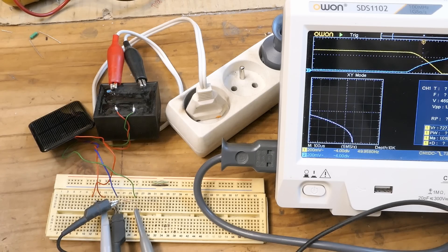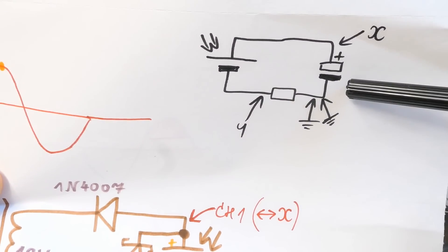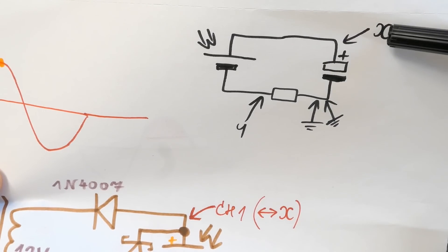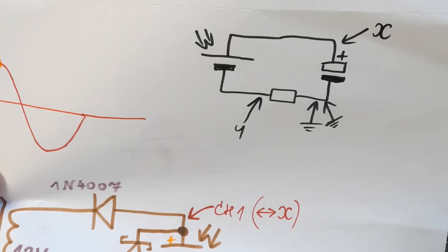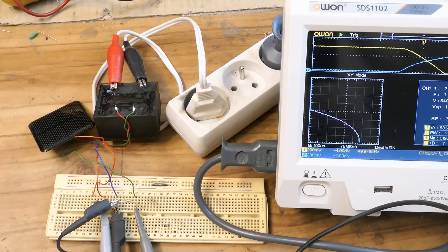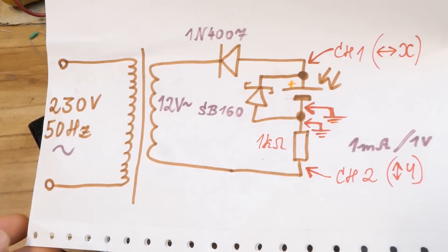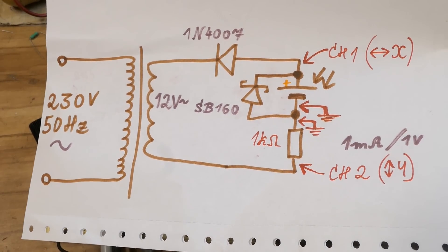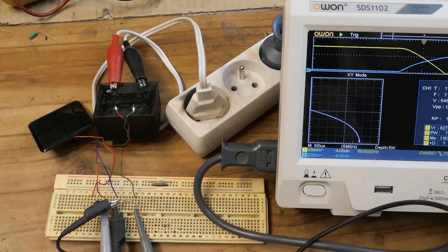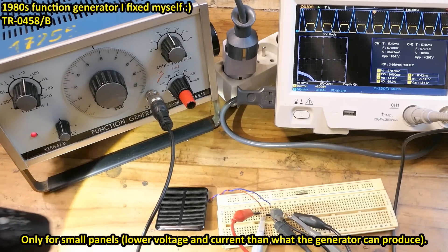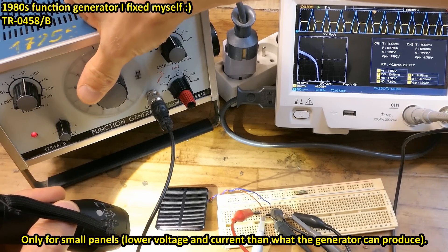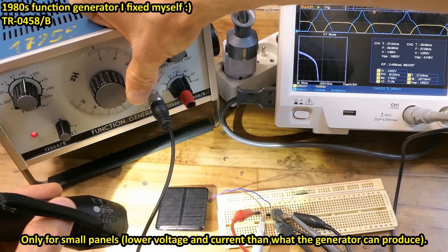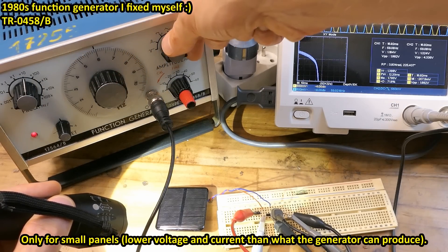And of course you could also trace the IV curves of a solar panel by just connecting it to a capacitor and tracing it as it charges. Or you could build some test load for it, which can vary the current and go through all the points. But of course this circuit with the transformer is super simple and it basically keeps refreshing automatically 50 times a second.